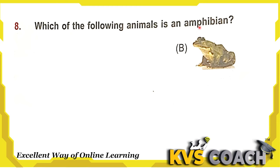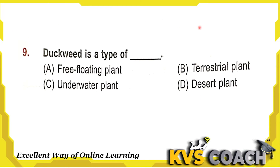Next question: duckweed is a type of what? It is a free-floating plant — yes, this is the right answer. It is not a terrestrial plant, not an underwater plant, and not a desert plant. It is a free-floating plant.